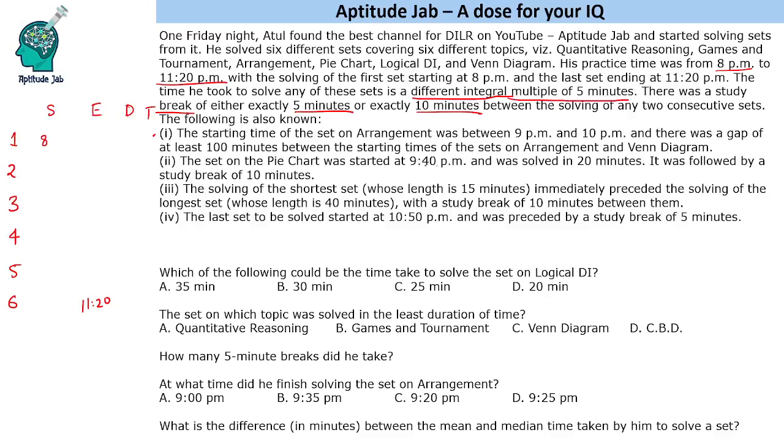Set on pie chart was started at 9:40pm and was solved in 20 minutes. So 9:40pm it will be solved and then there is a gap of 10 minutes. So next set will start at 10:10pm. Now we cannot put it here directly because we will have to look at other arrangements also. Coming to the third point.